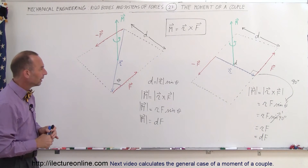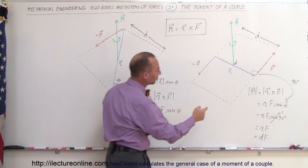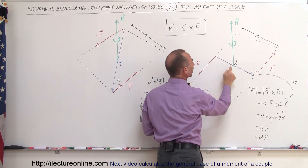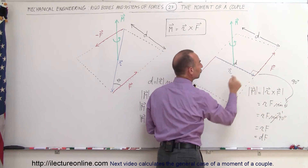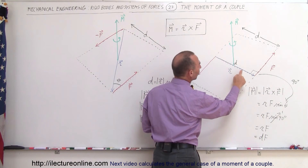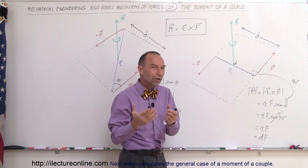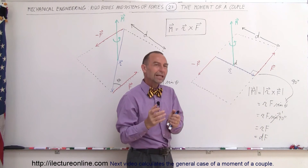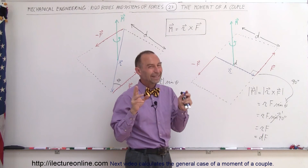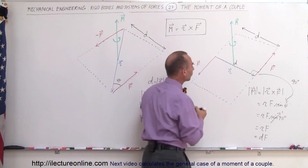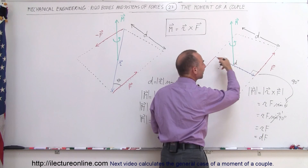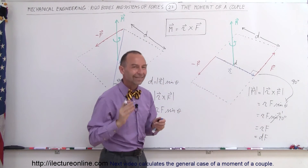One more important thing about the moment. We drew the moment at the halfway point between where the two forces are acting, but what if we want to find the moment at a different point along the line? It turns out it doesn't really matter where you calculate the moment. There isn't really any sense in saying the moment starts at a certain position. If you want to know what the moment is over here, or over there, it will be exactly the same magnitude in exactly the same direction.